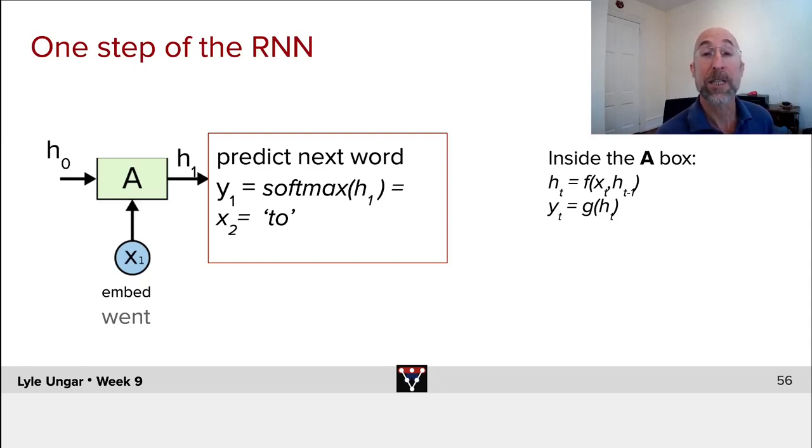The next hidden state is then taken to another neural net, g, which then produces a softmax, which is to say a probability distribution over all of the possible next words. We then observe the next word. The next word is to. I went to. And then we get an error, a loss, based on the log of the probability of to we estimated. We can update the weights using backpropagation, and then we repeat the process.